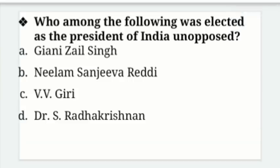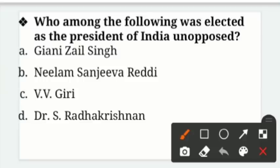Who among the following was elected as the President of India unopposed — in mein se unopposed India ka President kise elect kiya gaya tha? Options: Giani Zail Singh, Neelam Sanjiva Reddy, V.V. Giri, Dr. S. Radhakrishnan. Right answer is option B — Neelam Sanjiva Reddy was elected as President of India unopposed.